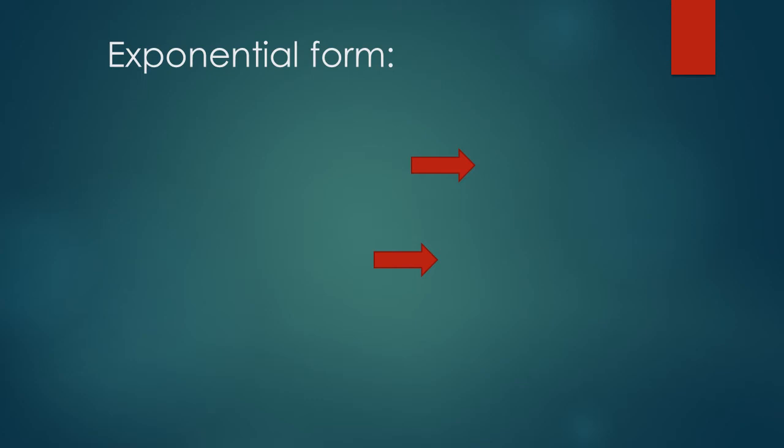There is exponential form. In number 1 case, 1 upon 1000 is equal to 1 upon 10 into 10 into 10. And it becomes exponential form, 1 upon 10 to the power 3.